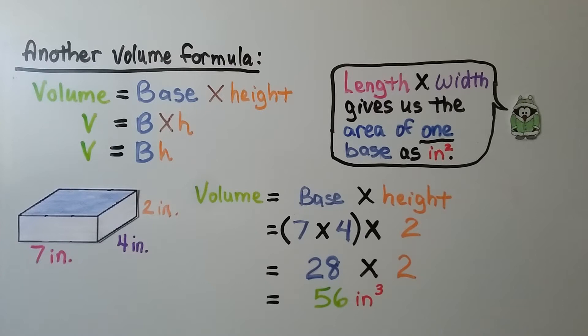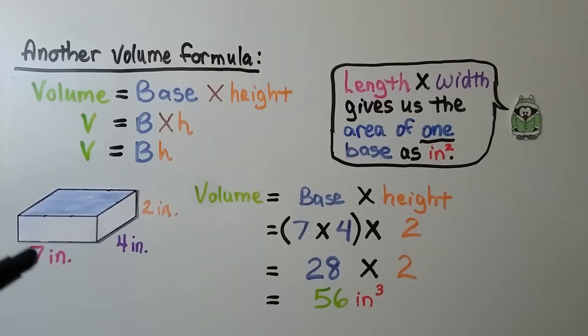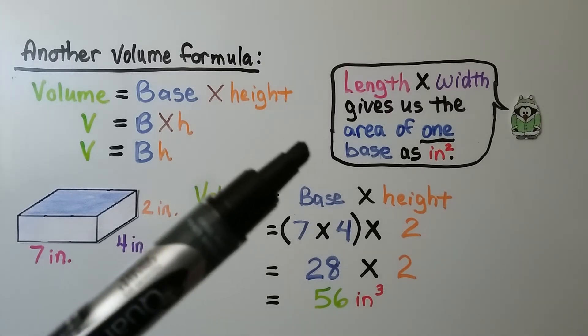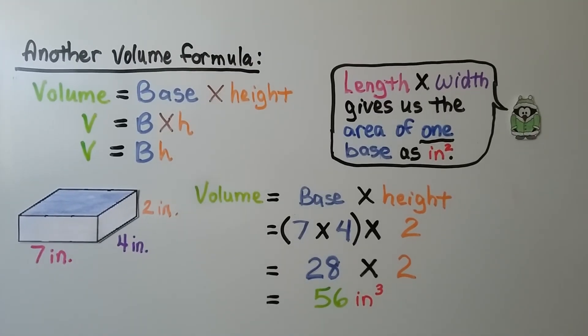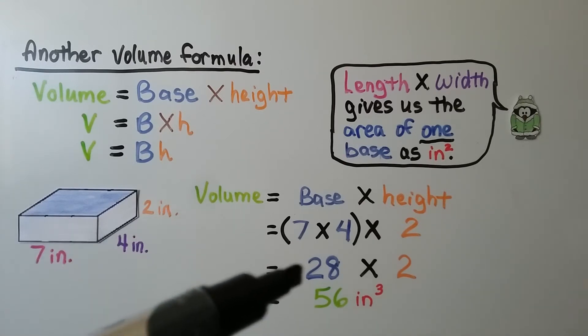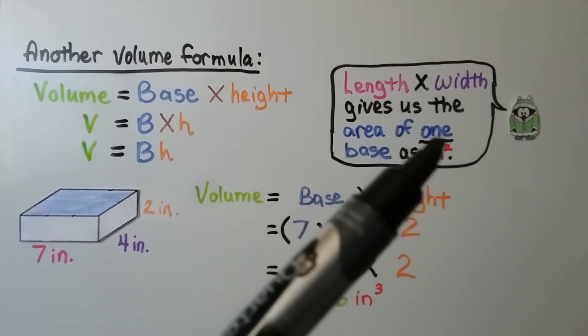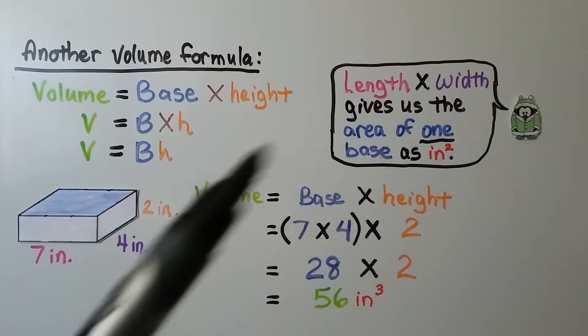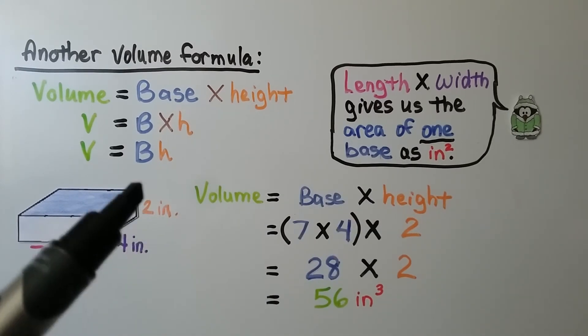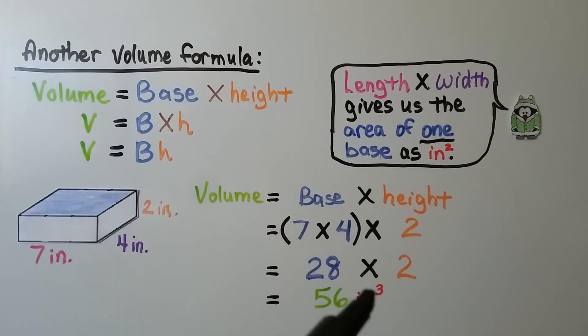Another volume formula uses base. And the base is the length times the width. That gives us the area of one base in inches squared, because it's a flat surface, 2D surface, the base is. And we multiply the base, that 28, times the height, 2, and we get 56 inches cubed, or cubic inches. Notice that the base was doing length times width. That's two dimensions, so it has a little 2 exponent for the two dimensions. Once we multiplied it by the height, that was our third dimension. It's in cubic inches, we have a little 3 exponent.